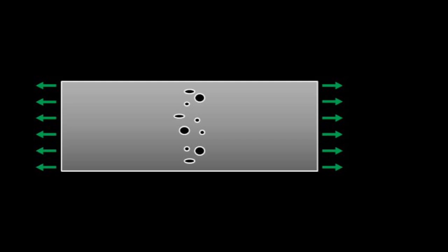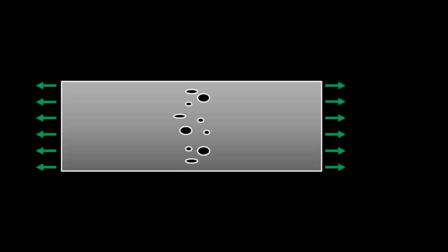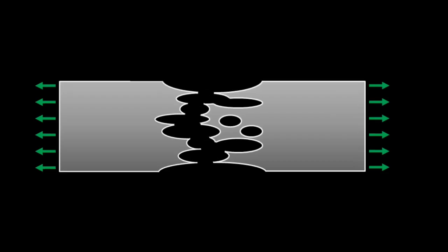Did you know that every block of metal has tons of microscopic voids inside it? And that these microscopic voids actually play a crucial role in failure. When a metal is stretched or loaded, these voids start to grow and link together until the metal fails.